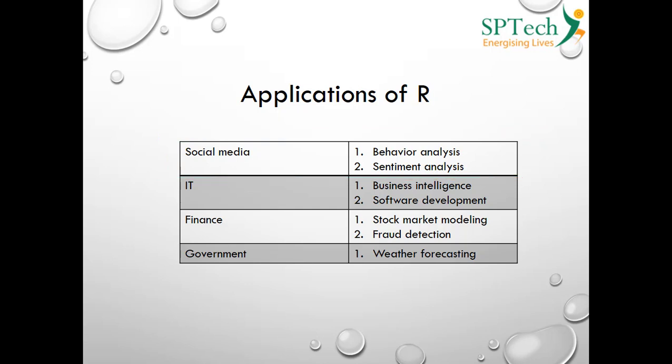R is also used in IT for business intelligence, which is very important today. Companies rely on data because data is money. Earlier, data wasn't given much importance, but today companies collect huge amounts of data across various forms, derive intelligence from it, and use that intelligence to make the right decisions at the right time.